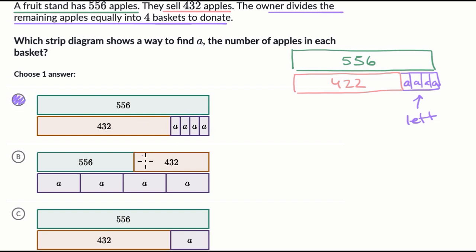Now, how would I use this to actually calculate it? Well, the first thing I would do is figure out what 556 minus 432 is. That would give me what's left over. Then to figure out A, I would divide all of that into four equal chunks. So this is going to be equal to each of these A's right over there.